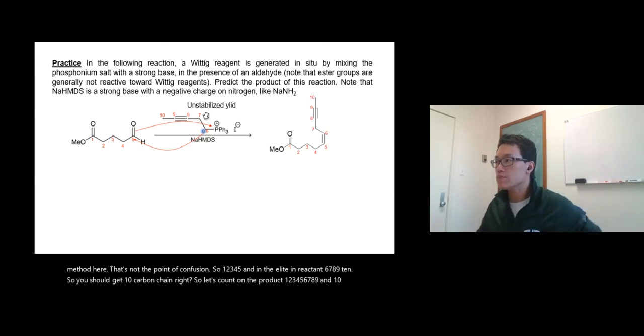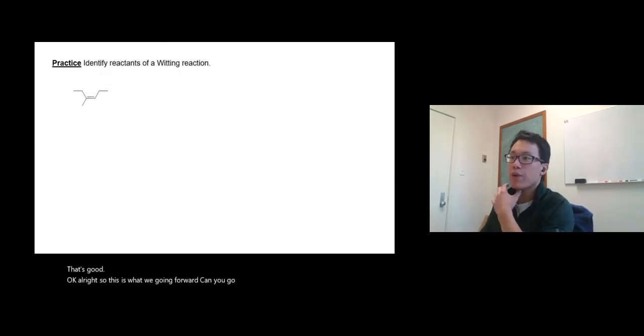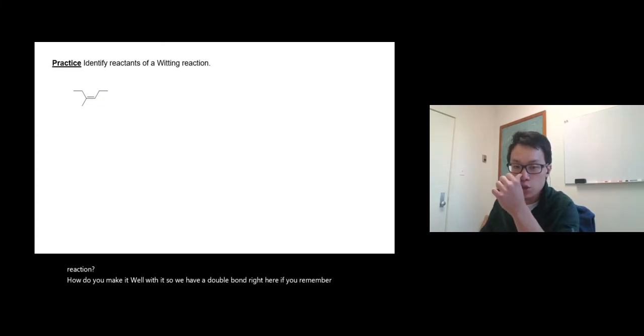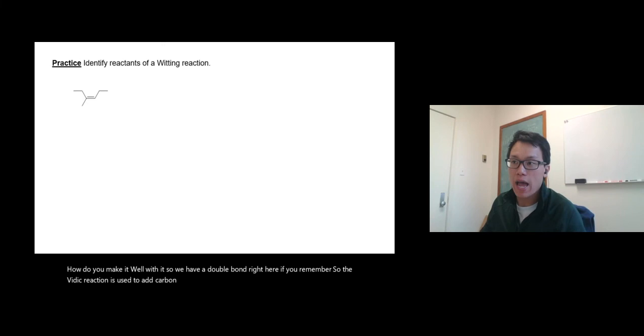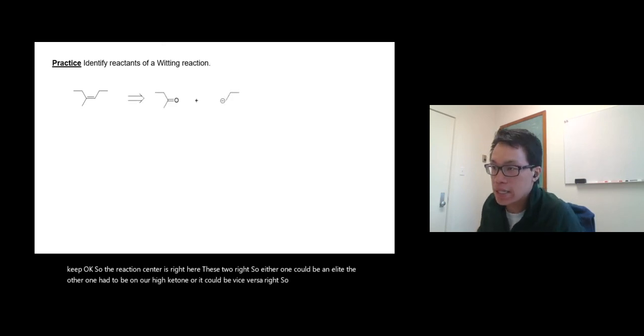So this is going forward. Can you go backwards? Identify reactants of Wittig reaction. How do you make it? Well, Wittig—so we have a double bond right here. If you remember, the Wittig reaction is used to add carbon on a carbon chain and we get the double bond and alkene. So the reaction center is right here, these two. So either one could be an ylide, the other one has to be an aldehyde or ketone, or it could be vice versa. So let's say I make the ketone react with an ylide. That guy right there is the ylide.